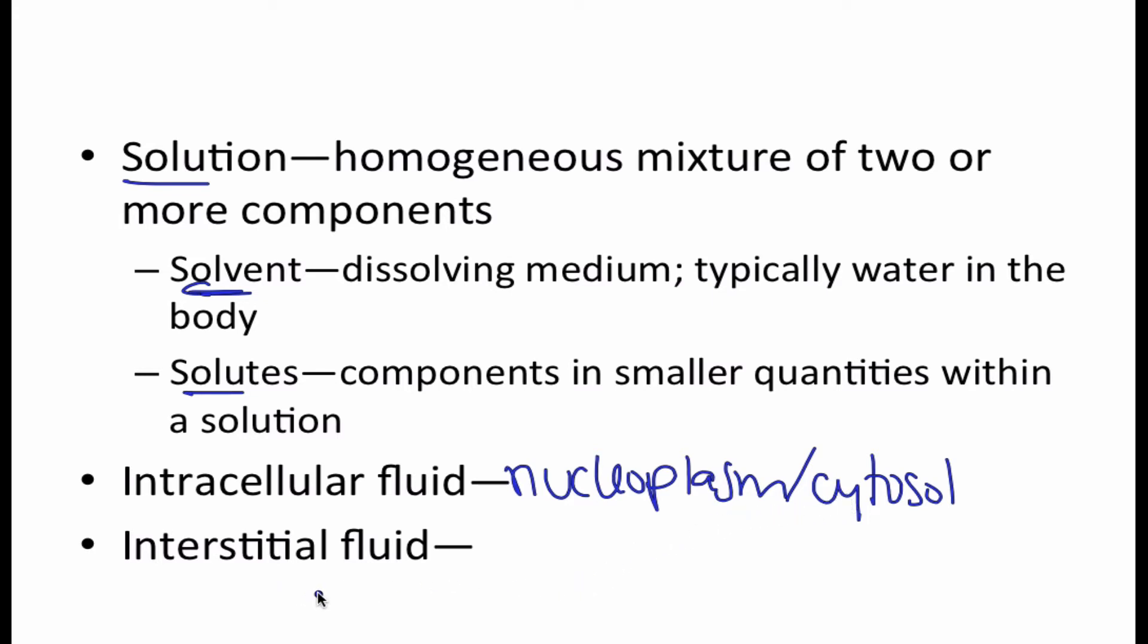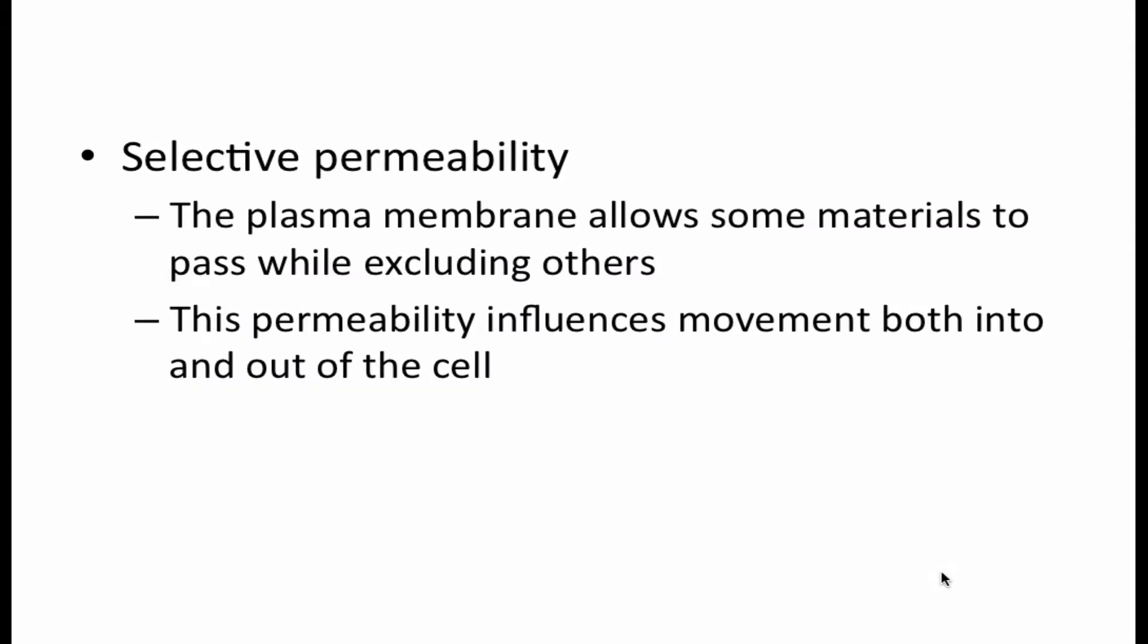Interstitial fluid is going to be fluid on the exterior of the cell. So this will bathe the cell in amino acids, sugars, fatty acids, vitamins, hormones, those types of things. Selective permeability is when some things are able to move through the lipid bilayer while some things aren't able to move. So permeability will influence movement both into and out of a cell.